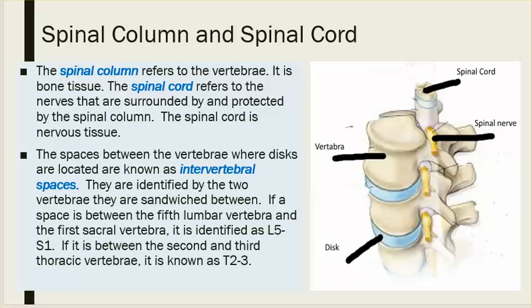The spaces between the vertebrae where discs are located are known as intervertebral spaces. They are identified by the two vertebrae they are sandwiched between. For example, a space between the fifth lumbar and first sacral vertebrae is identified as L5 to S1. Between the second and third thoracic vertebrae, it is known as T2 to T3.